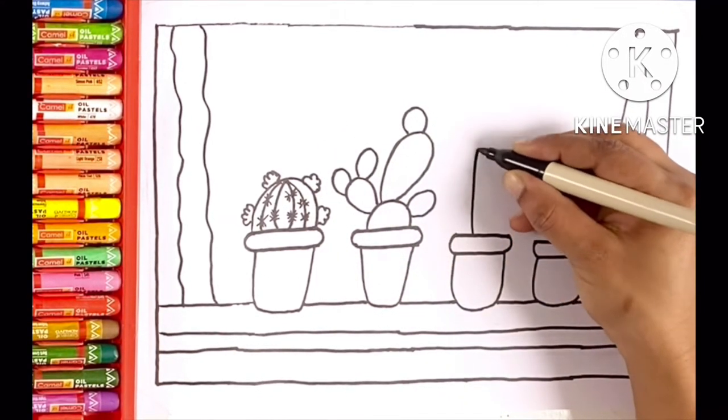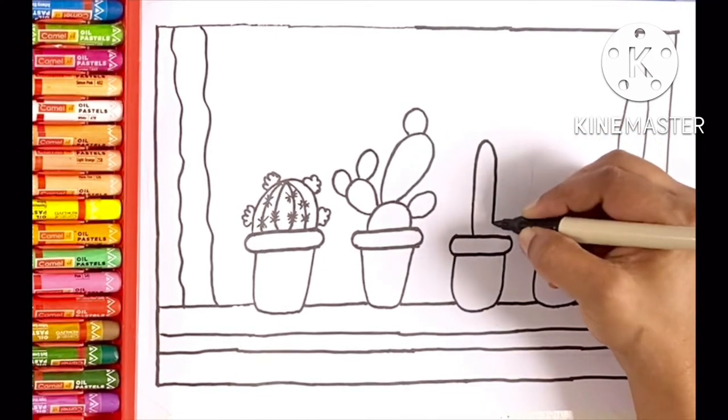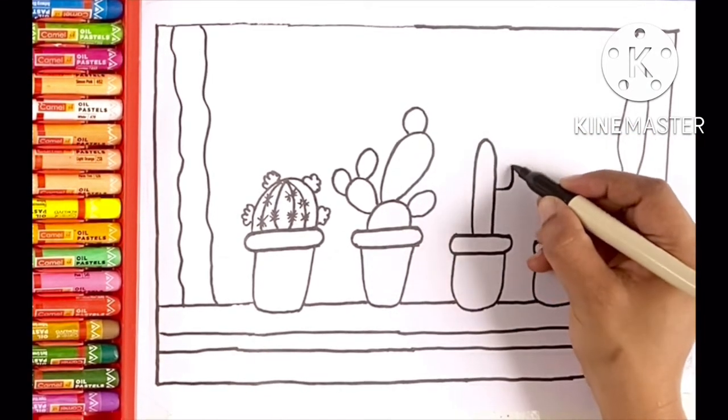Now in the third pot, draw semi oval and L-shaped curves on both the sides.